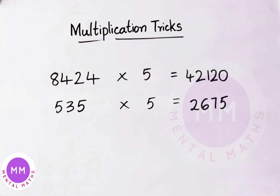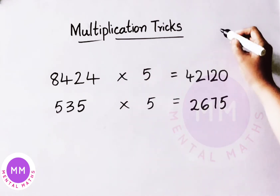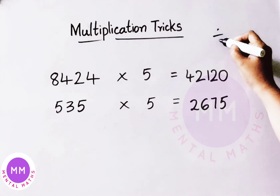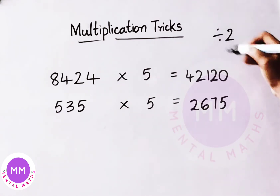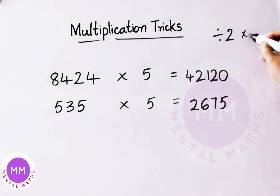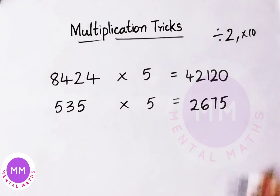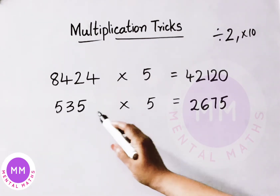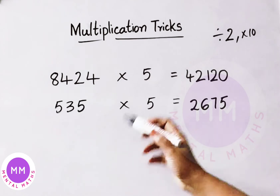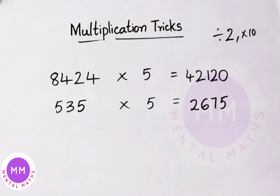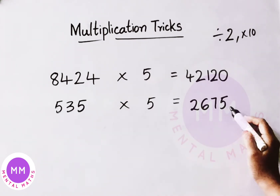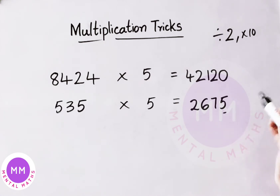In these examples, what we have done is: given number first we have to divide by 2, then multiply that result by 10 and we get the result. If the number is an odd number, take the previous number and half that value. Then add 5 at last and you will get the result.